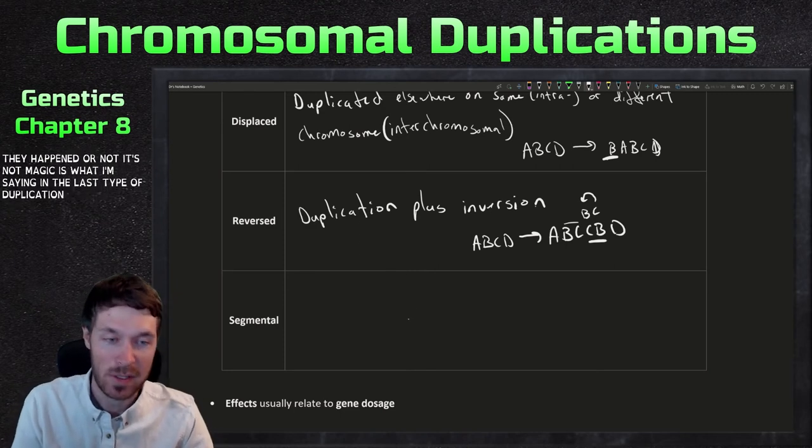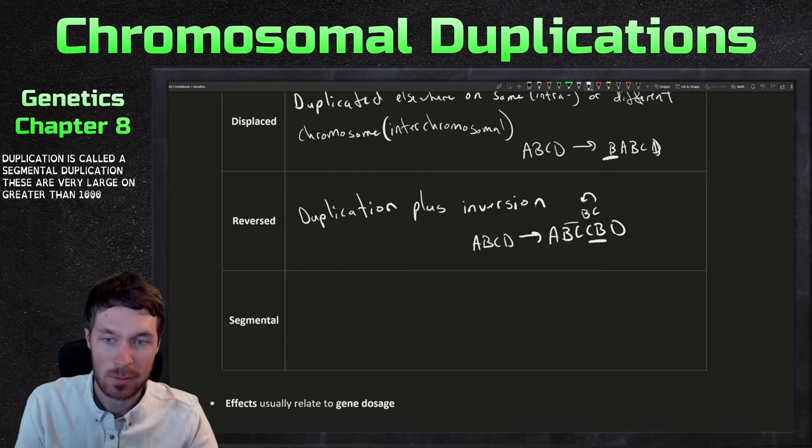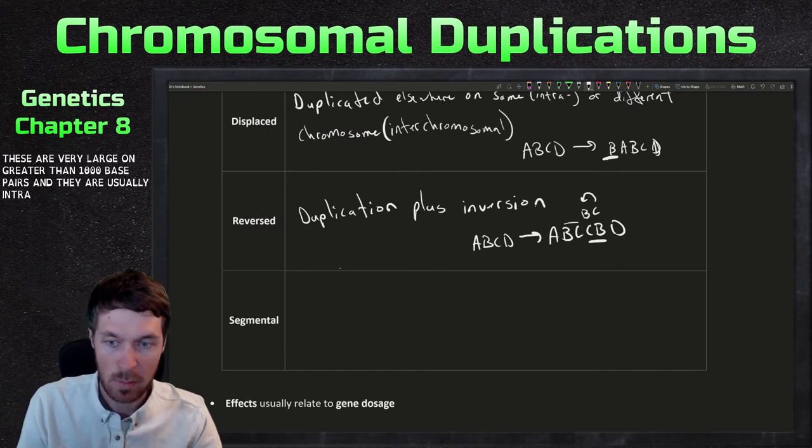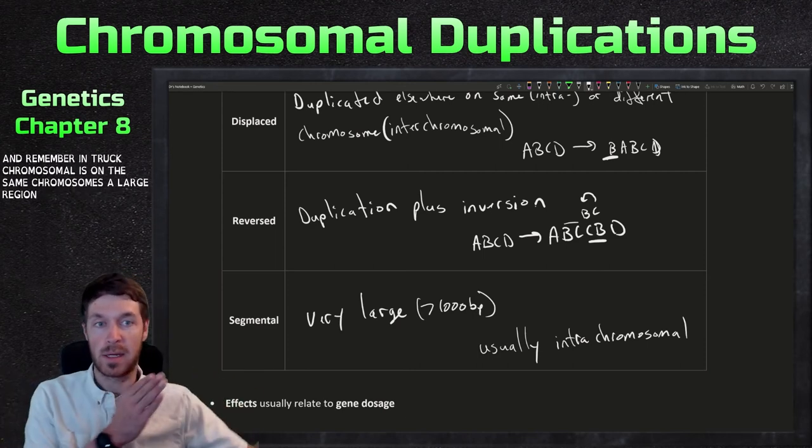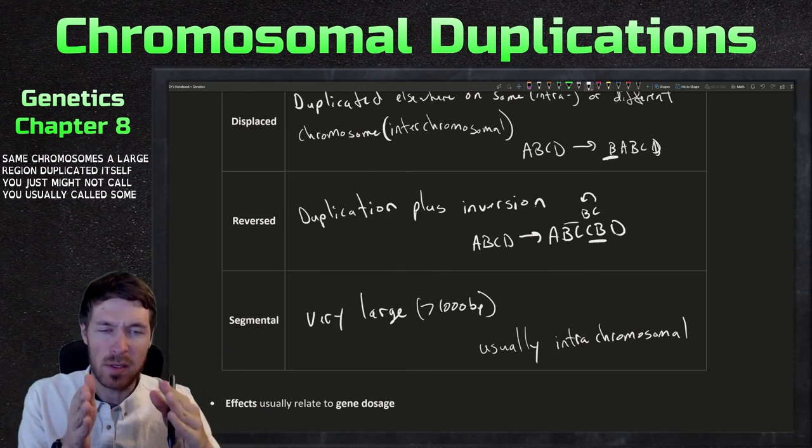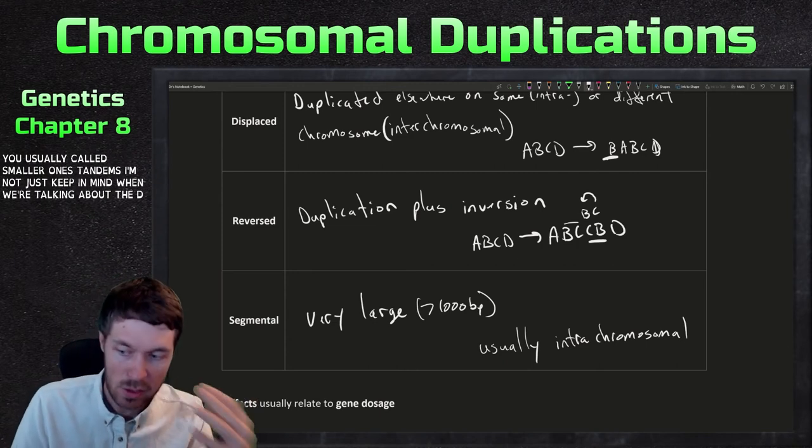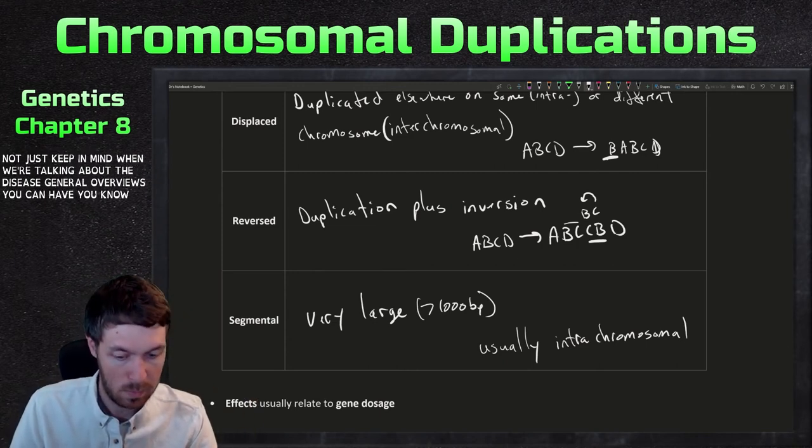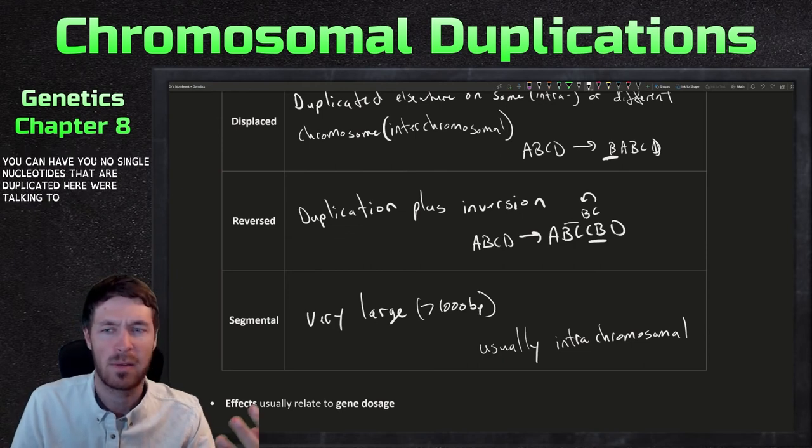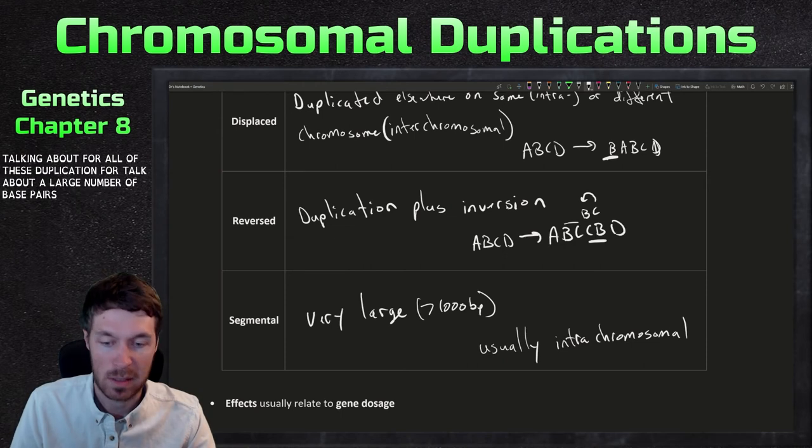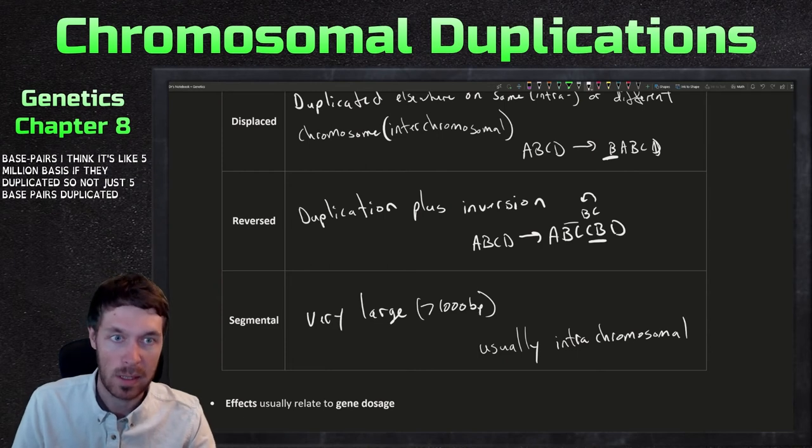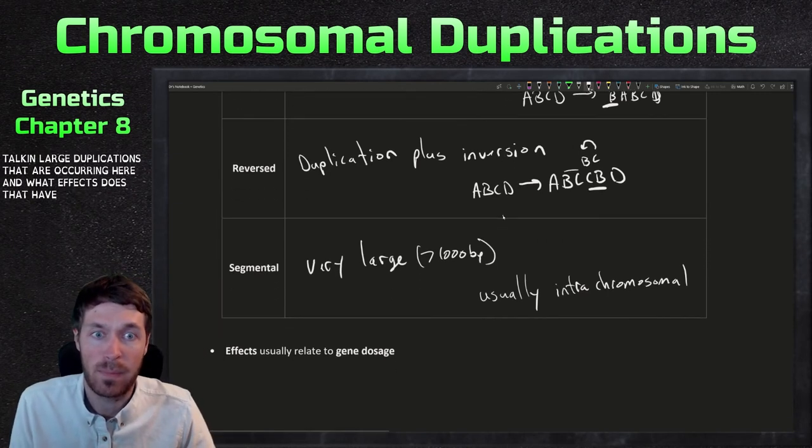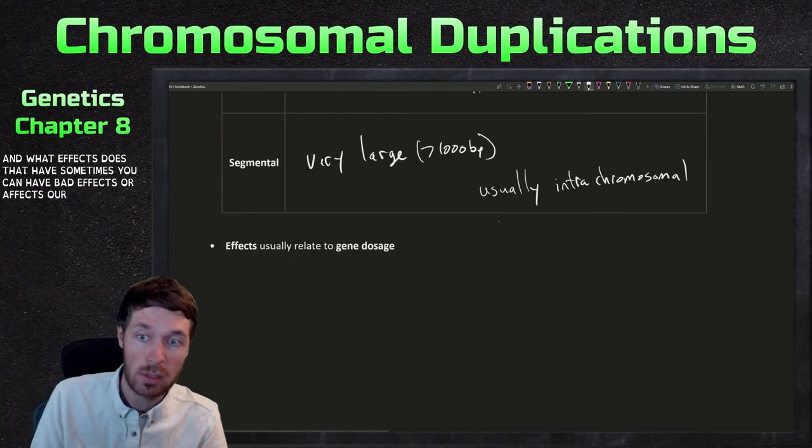And the last type of duplication is called a segmental duplication. These are very large, greater than 1,000 base pairs, and they are usually intra-chromosomal. And remember, intra-chromosomal is on the same chromosome. So a large region duplicated itself. You usually call smaller ones tandems. Now, just keep in mind when we're talking about these general overviews, you can have single nucleotides that are duplicated. Here, we're talking about, for all of these duplications, we're talking about a large number of base pairs. I think it's like 5 million bases if they duplicated. So we're talking large duplications that are occurring here. And what effects does that have?